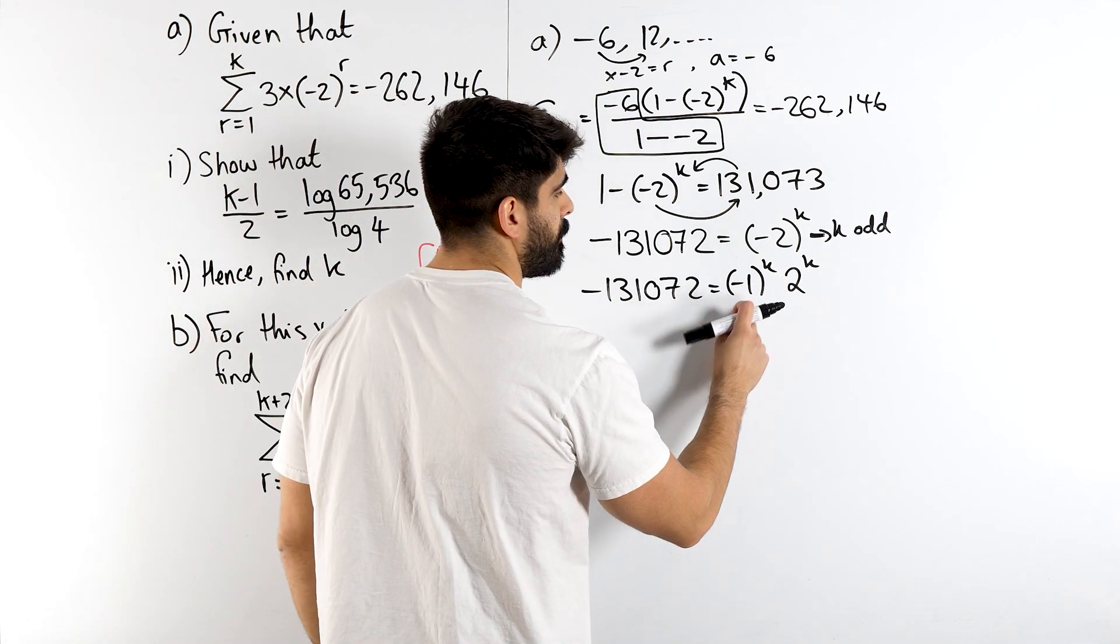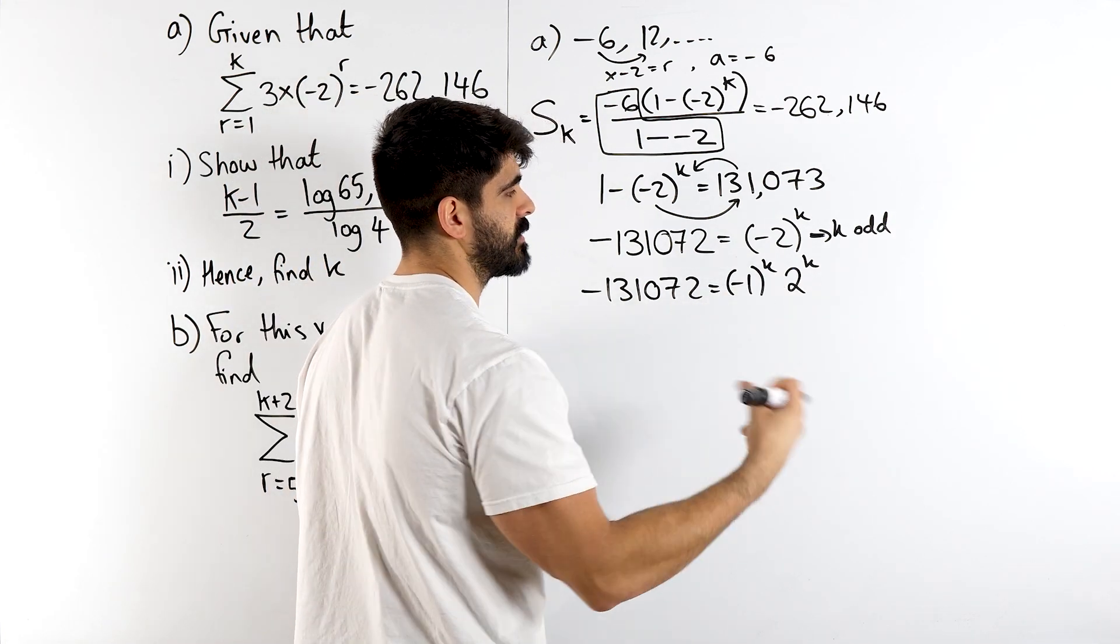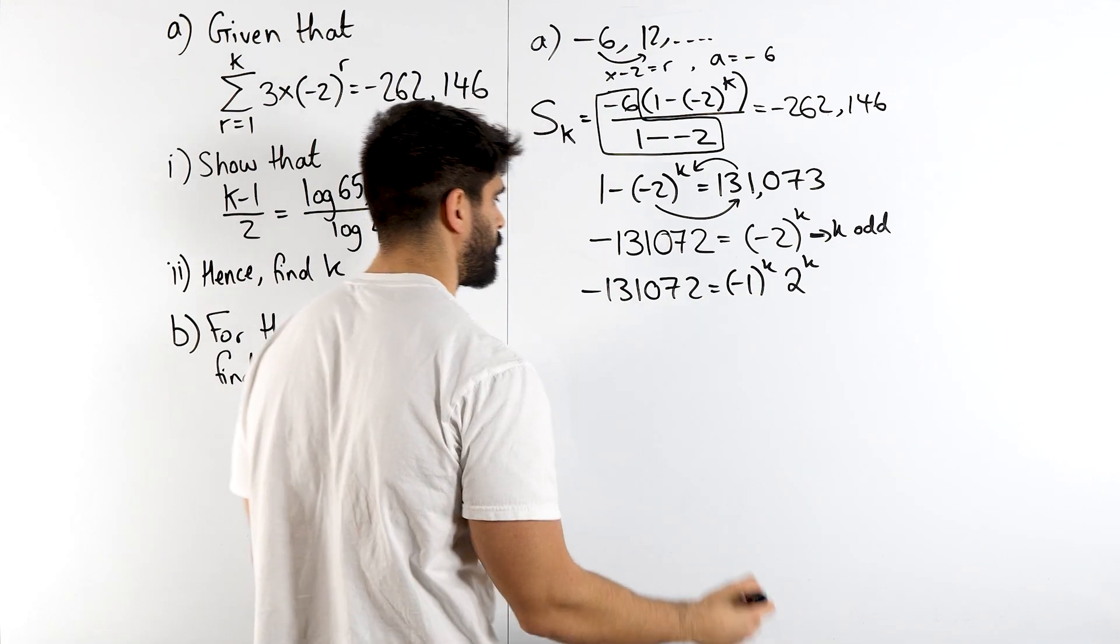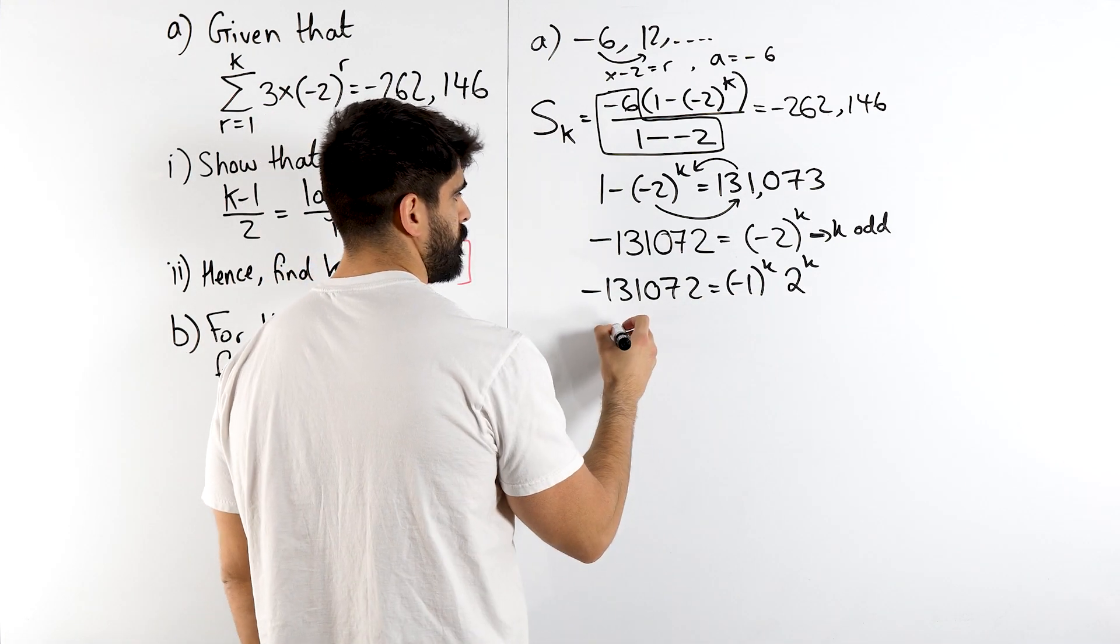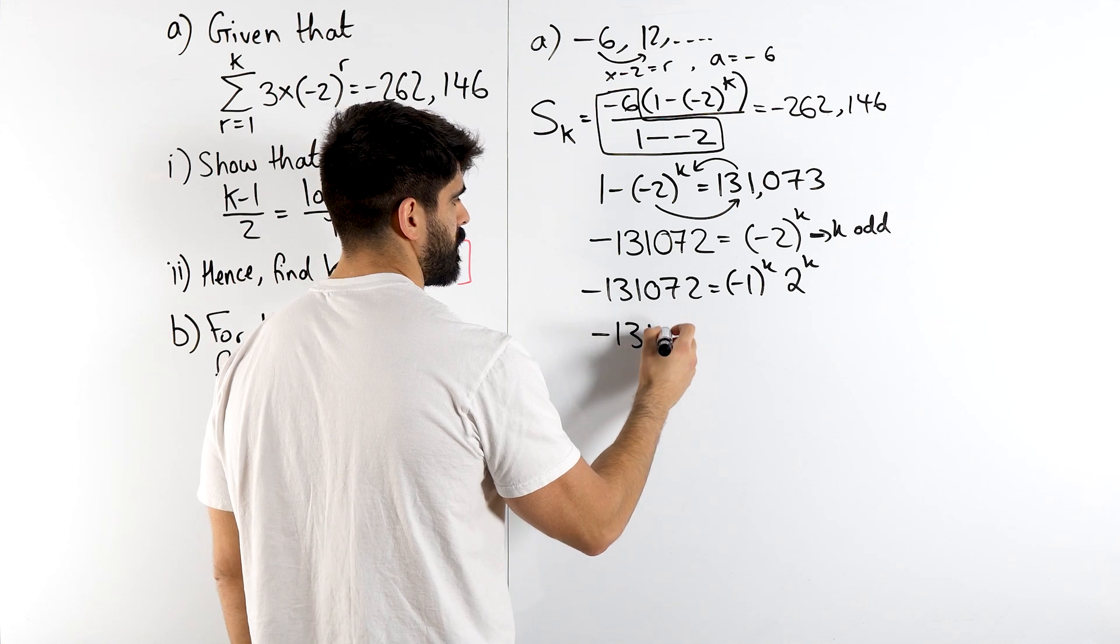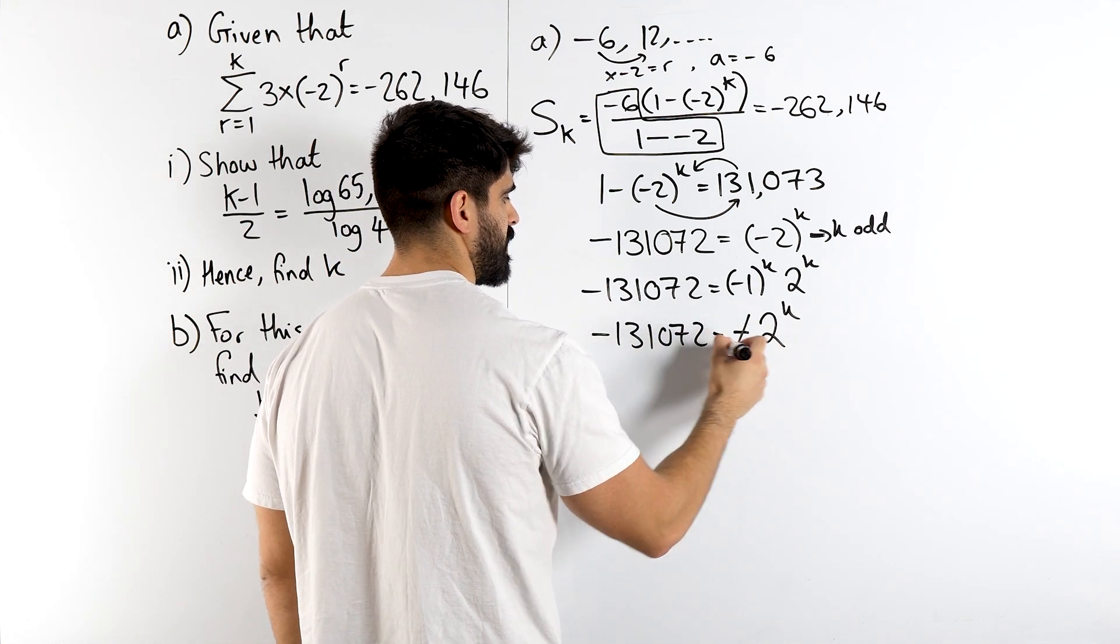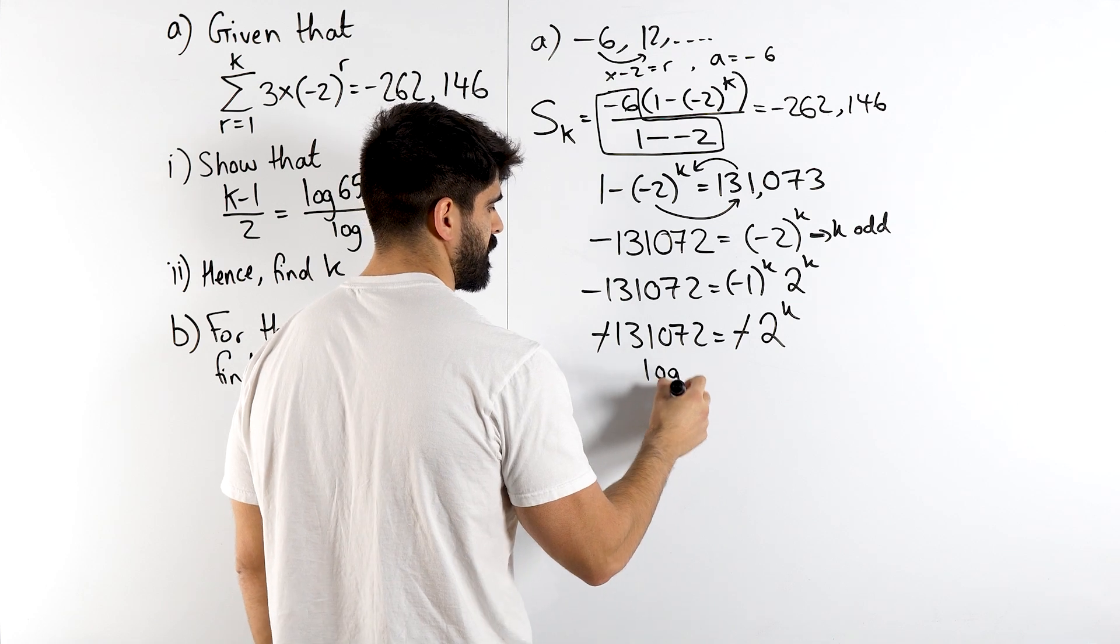Now if k is odd, minus 1 to the power of an odd number is minus 1. Minus 1 squared would be 1, minus 1 cubed would be minus 1. So what that means is, we're left with minus 131,072 is the negative of 2 to the power of k, which the negatives cancel. Now we can take log of both sides.